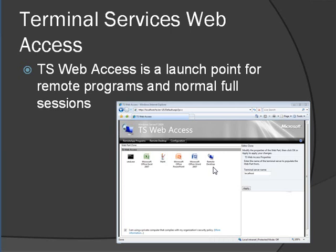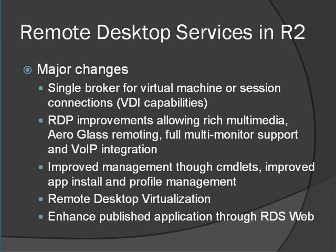There are improvements in R2 around TS Web Access. In Windows Server 2008, you see every single application that's published whether you have access or not. In 2008 R2, you can specify multiple servers and it only shows you the applications you actually have access to — a streamlined view. Instead of seeing everything and potentially failing to launch certain apps, R2 takes a sum of all applications available across multiple servers and only shows you the ones you have permissions to view.